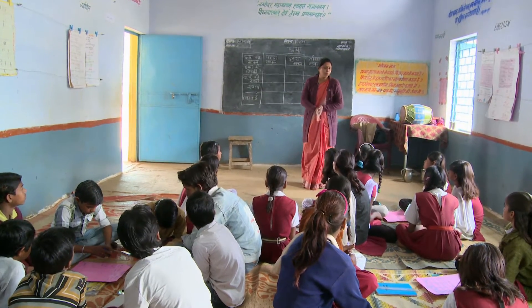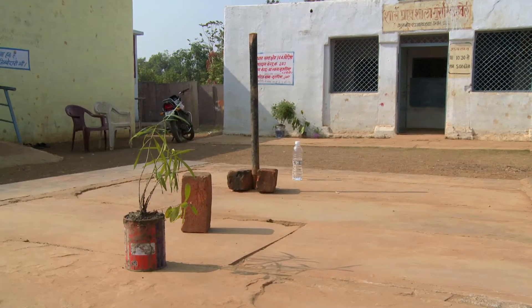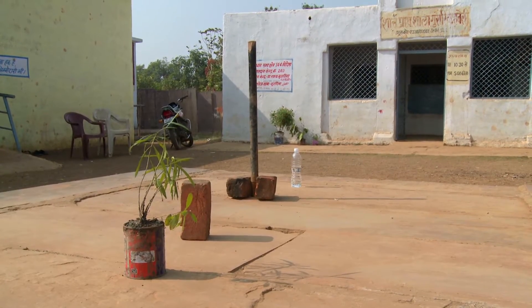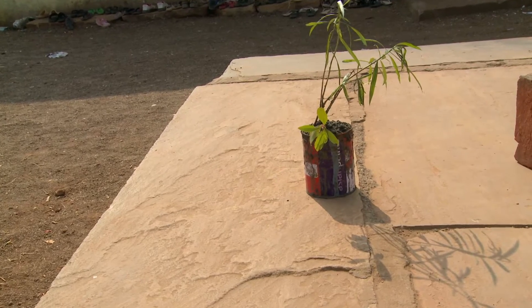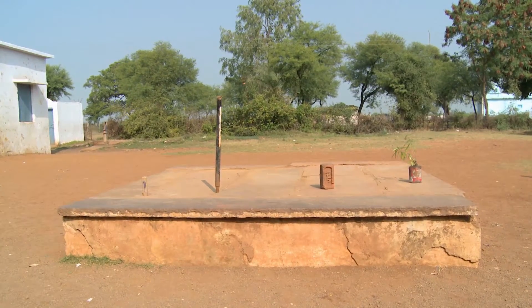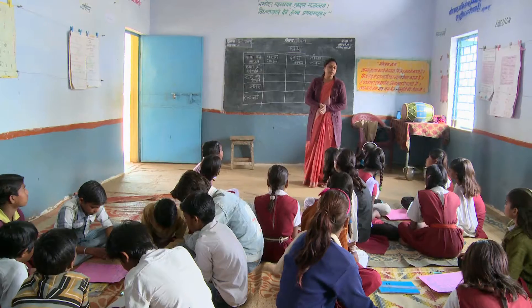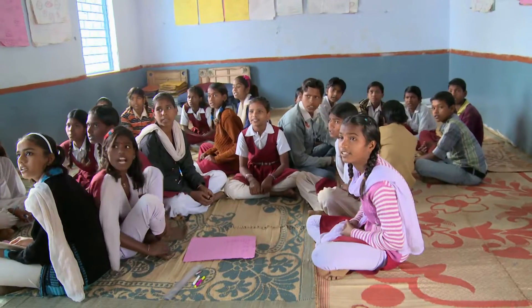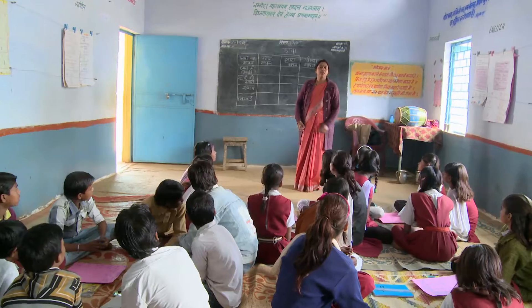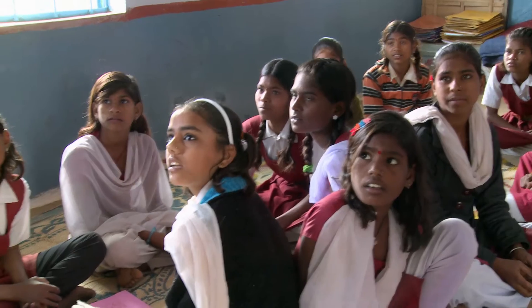In this upper-primary class, a teacher uses natural resources outside to teach a science lesson on light and shadows. The teacher has prepared by setting up four objects in the sun and has divided the class into four groups. The teacher tells her students that they will be studying the shadows of these objects.